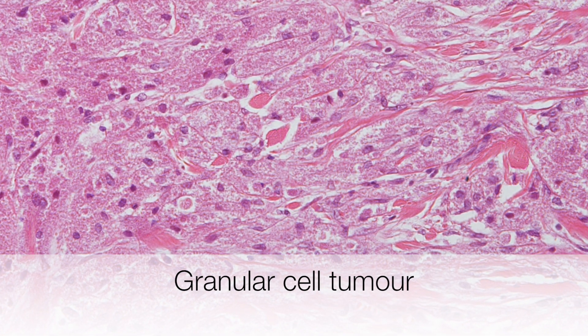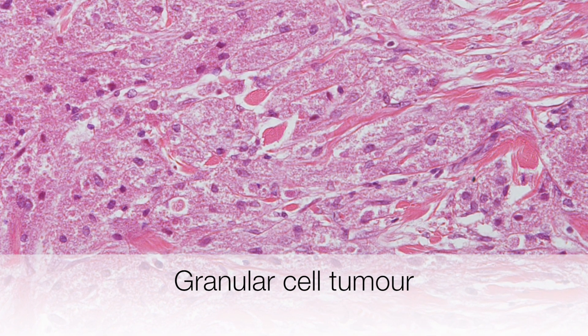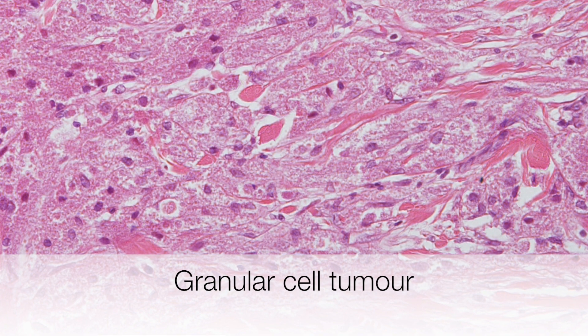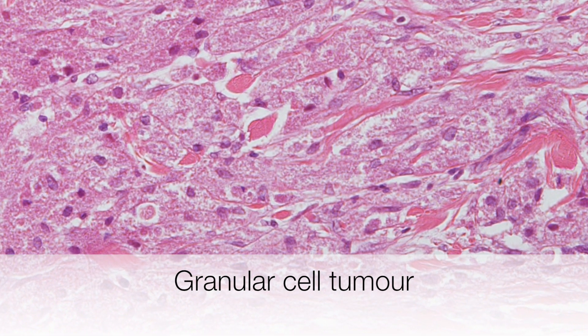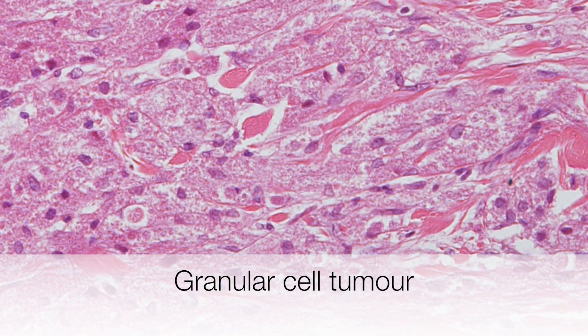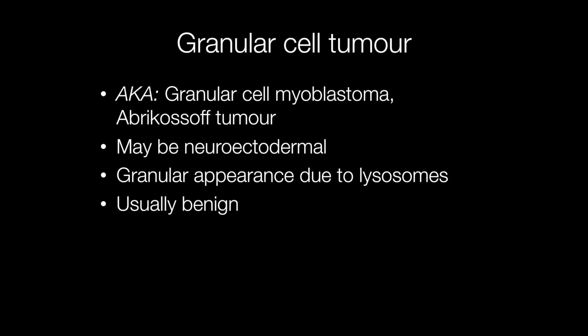This is a tumour composed of cells with abundant pink staining granular cytoplasm, and this is called a granular cell tumour. Granular cell tumours are thought to be predominantly neuroectodermal in origin. The granular appearance is due to the presence of lysosomes in the cytoplasm, and these lesions are usually benign.